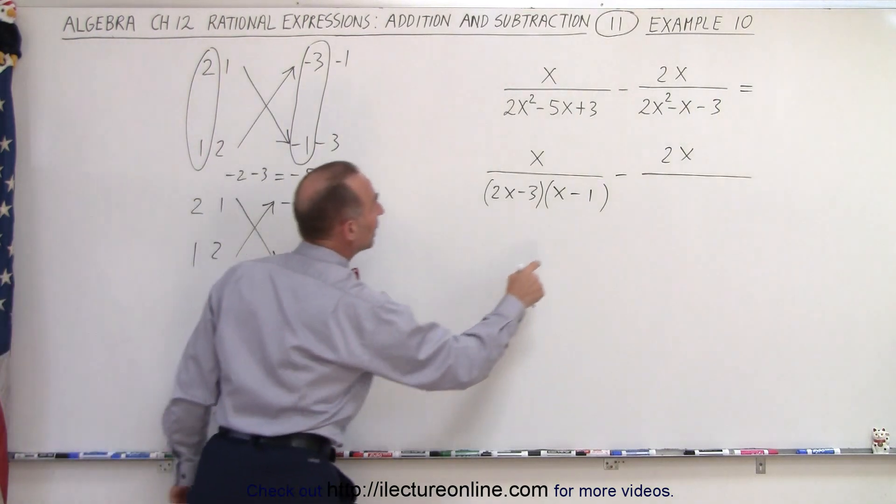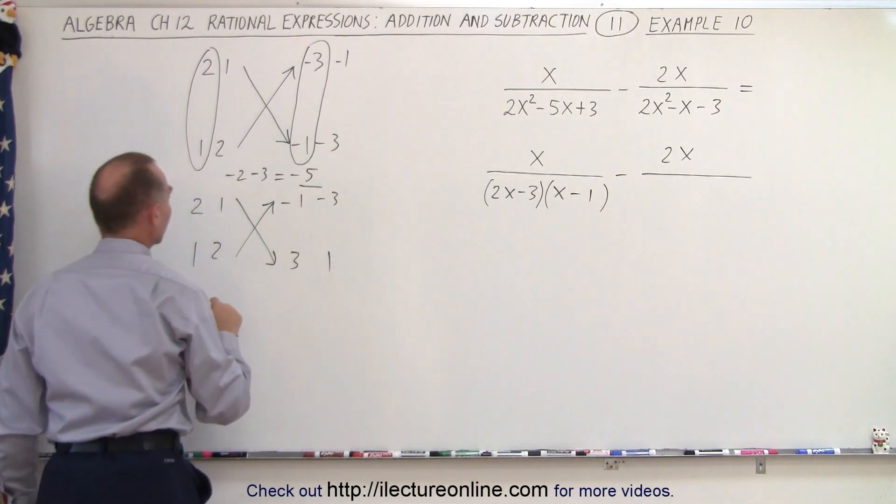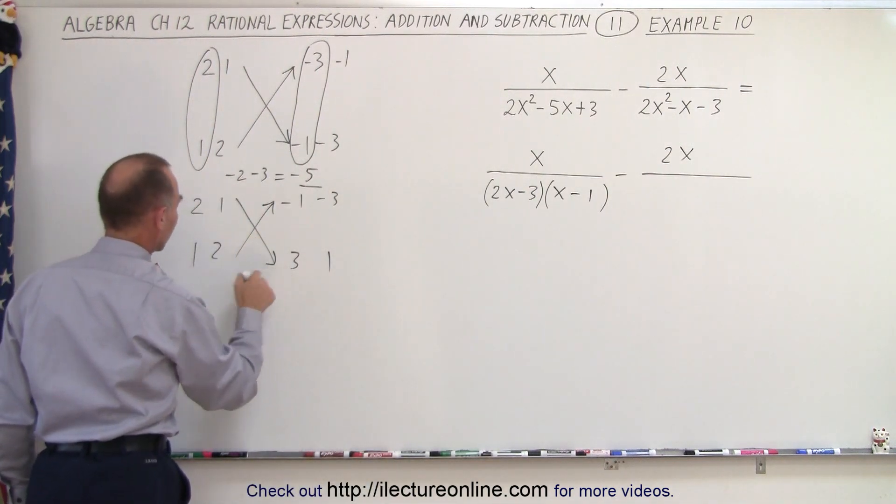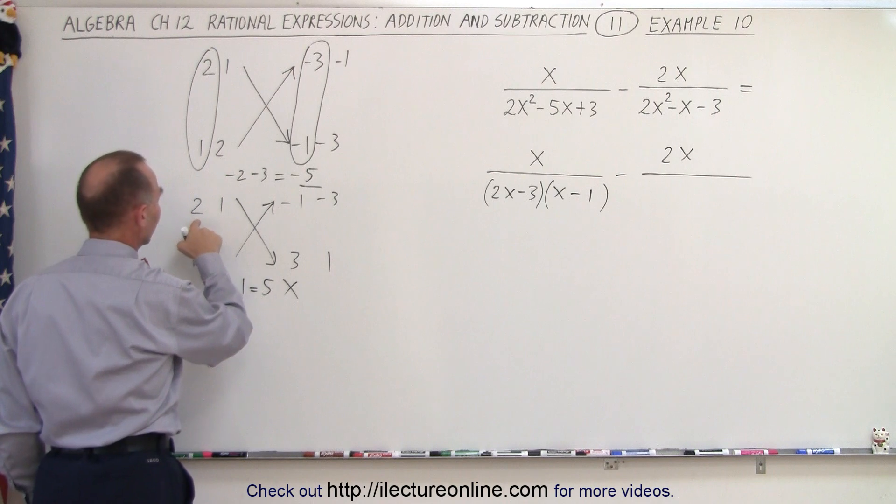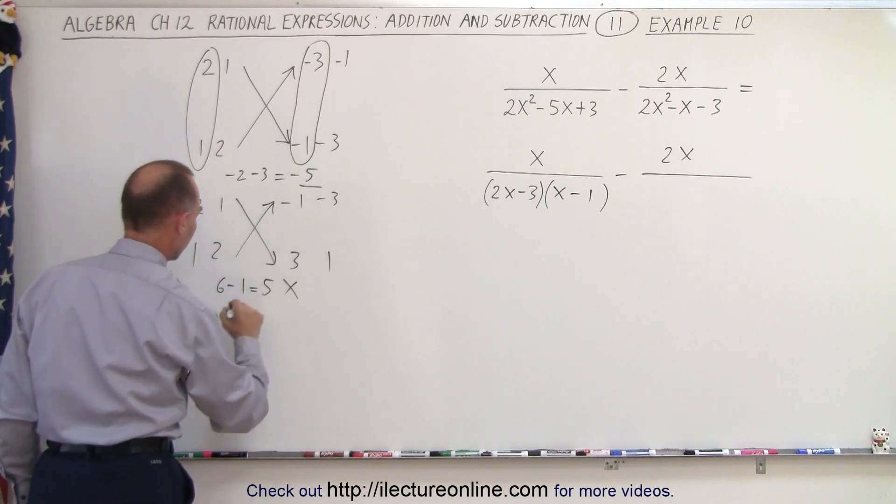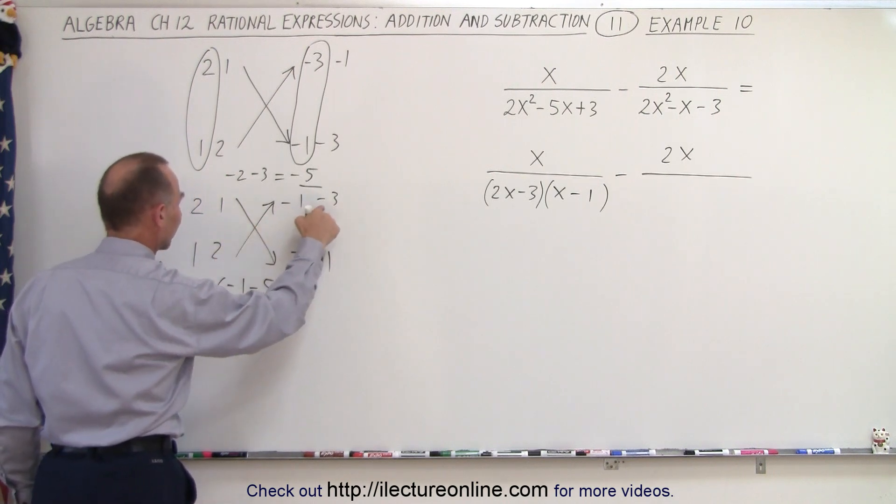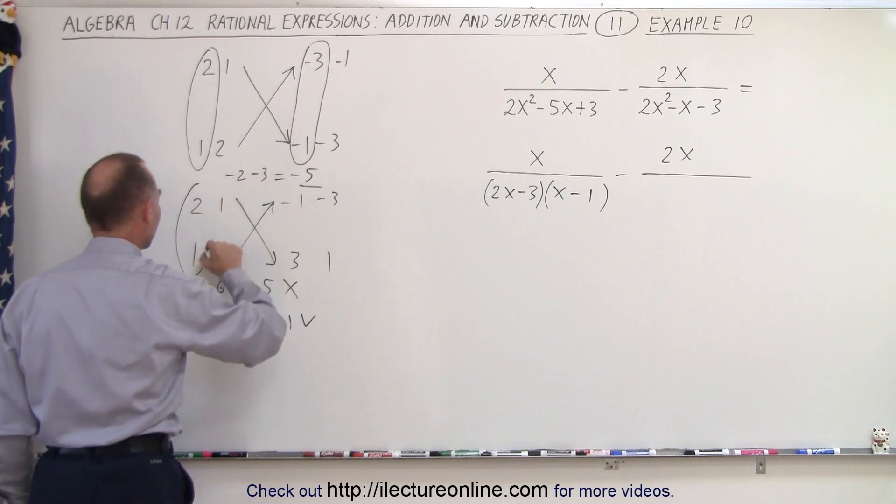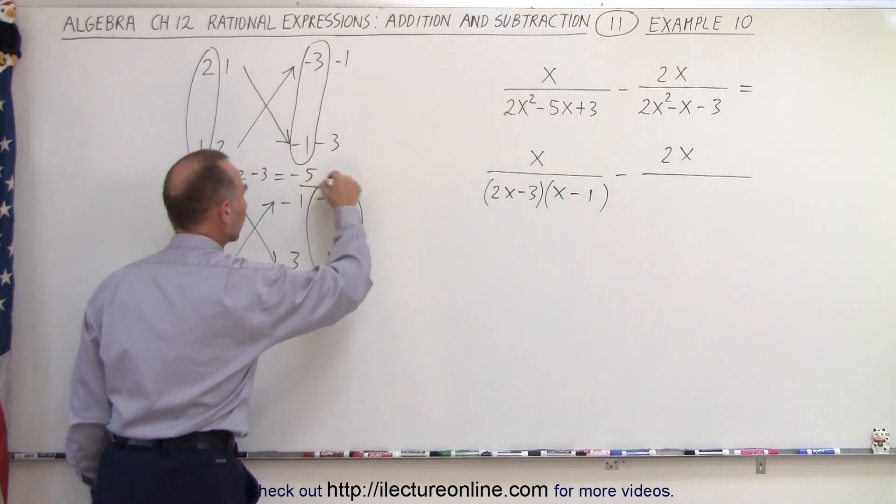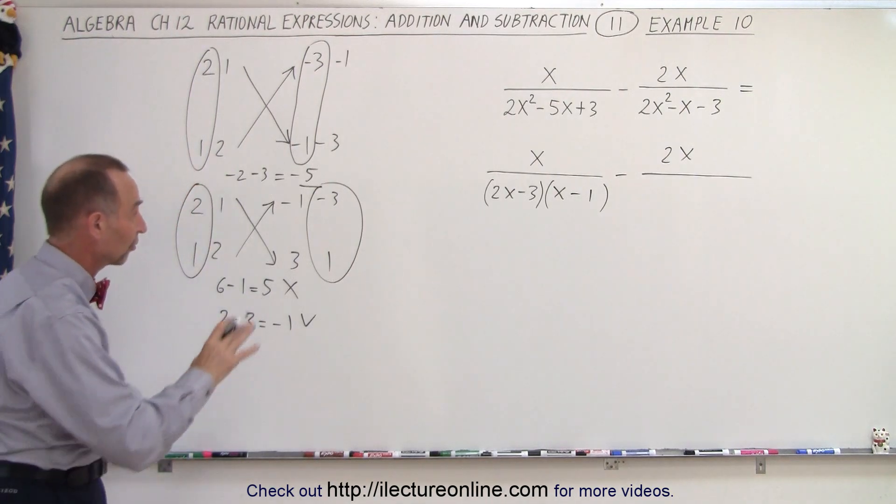What we need here is a negative 1 for the middle term. So 2 times 3, which is 6, and 1 times negative 1 minus 1, which is 5. That doesn't work. How about this with this? So we have 2 times 1 and 1 times the negative 3, which is negative 1. And that works. This combination with this combination gave us the correct factors.